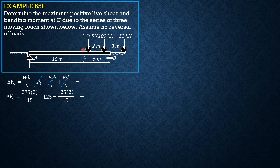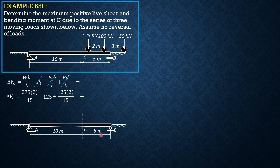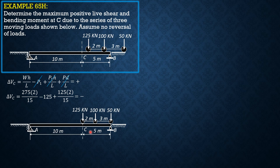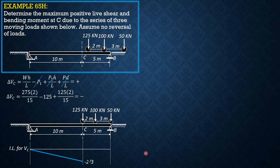Therefore the preceding position gives the maximum shear at C. The preceding position is when load 1 was over C. So the loading position for maximum shear at C is when load 1 is over C. We can use the influence line diagram for shear at C. You can also solve for Ra in that position — from the free body diagram, Ra minus shear at C equals zero, so shear at C maximum equals Ra.